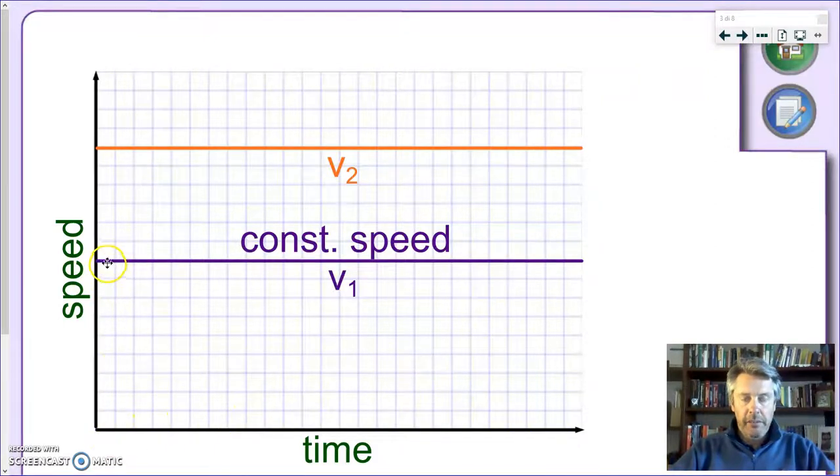As you can see here, this purple line represents a constant speed, which we'll call v1. It means every second, every minute, every hour, the speed stays the same. How about this orange line? Again, this orange line represents a motion with constant speed, and we'll call it v2.